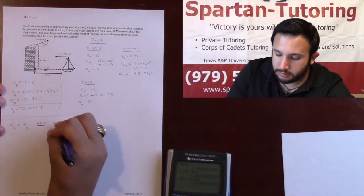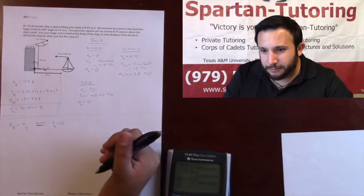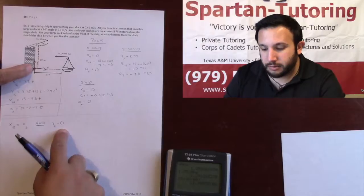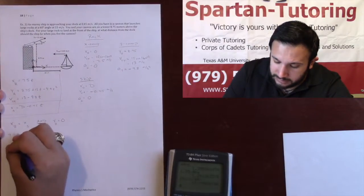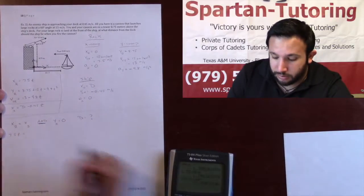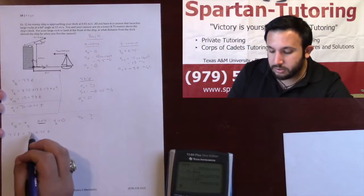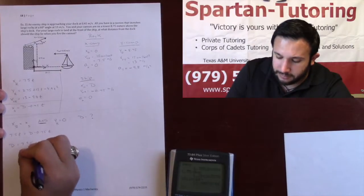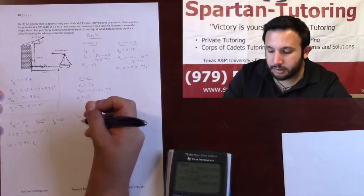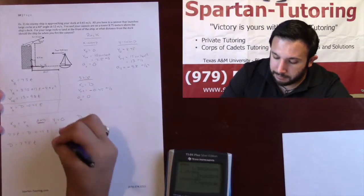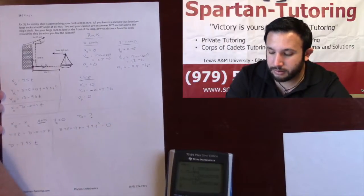You need the x position of the rock to equal the x position of the ship, but specifically you need it whenever the y of the rock is at zero. Let's go ahead and set these up. The x of the rock is going to be 7.5t, and by the way d is what I'm looking for—that's what I'm trying to solve for. So I need that 7.5t to equal the x of the ship, well that's d minus 0.45t. Solving for d, adding that over to the side, d is 7.95t. That's cool and all, but what t value? It's going to be the t value when the y of the rock is equal to zero.